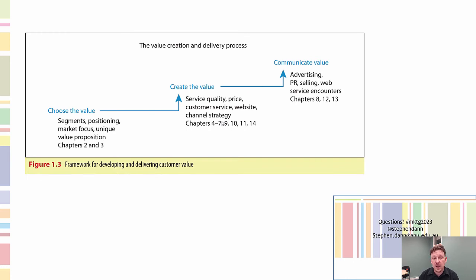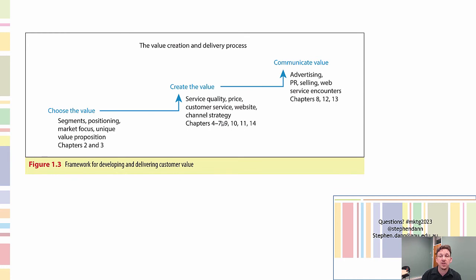It's worth noting that the approach of choose, create, communicate can also loop back — from communication back to selection, and communicate can go back to create, because during the process of communication you may find that you develop a new product offer or create additional value that the customer hadn't previously recognized as being part of the offering.